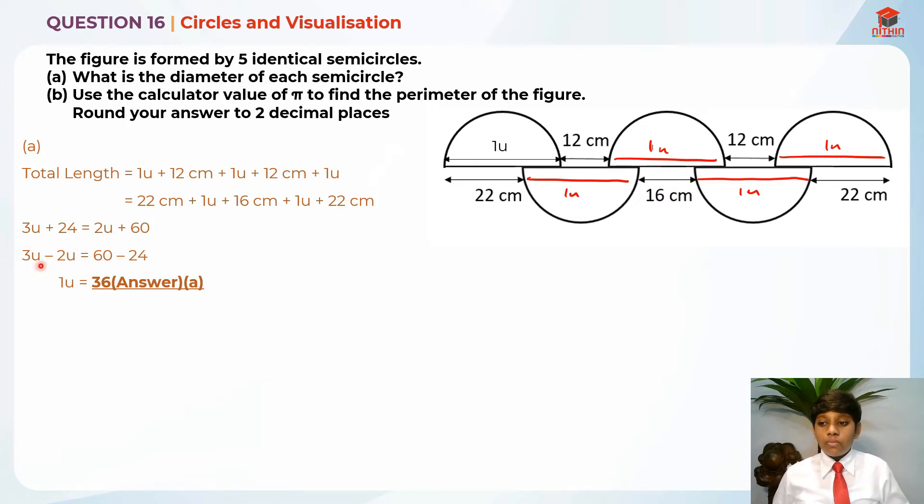I hope you understood my explanation for part A. Let's move on to part B now. For part B, they are telling us to use the calculator value of pi. So we need to use the pi in our calculator to find the perimeter of the figure. Round the answer to two decimal places.